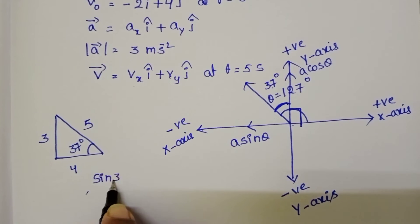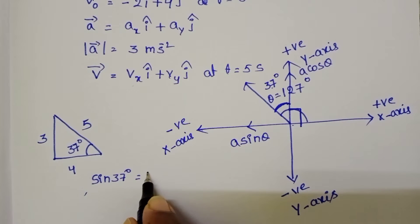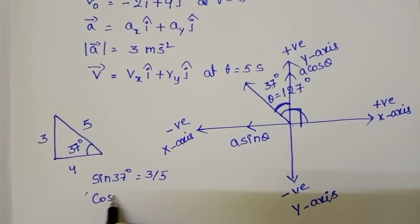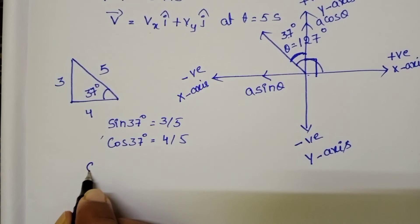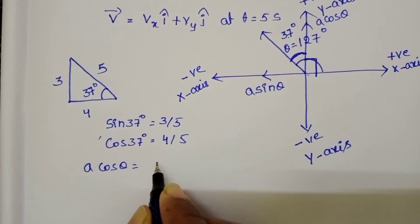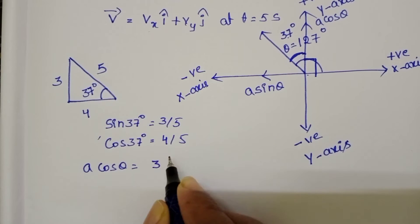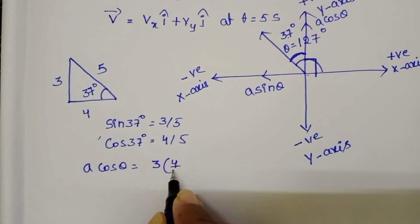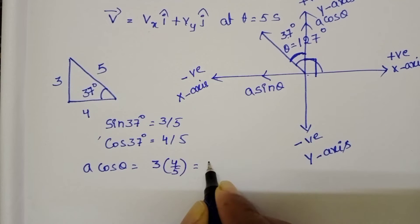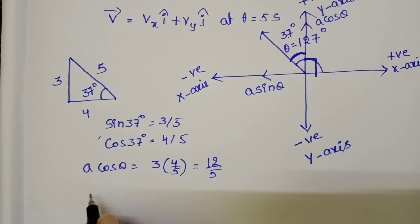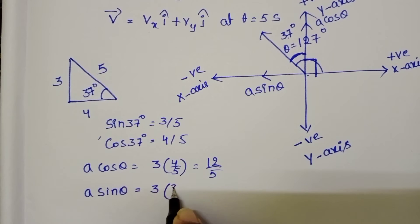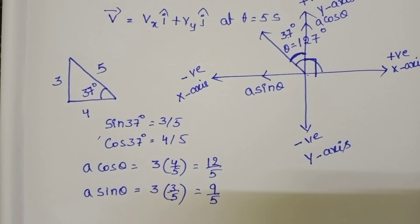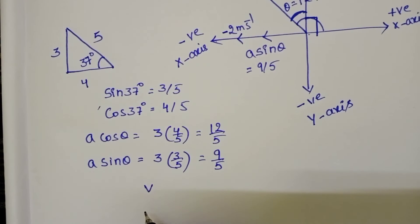Since sin 37° equals 3/5 and cos 37° equals 4/5, the acceleration components are: ay equals A cos theta equals 3 into 4/5 equals 12/5, and ax equals A sin theta equals 3 into 3/5 equals 9/5. Since the x-component is along the negative x-axis, ax equals minus 9/5.